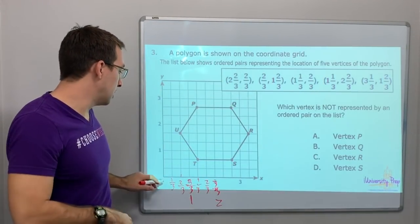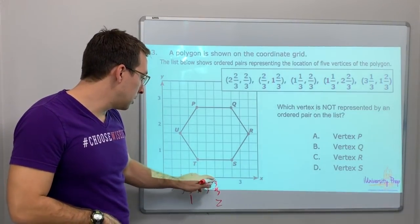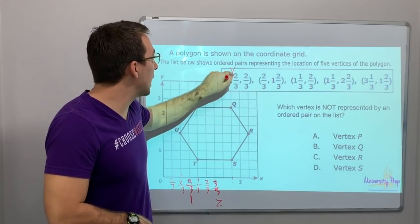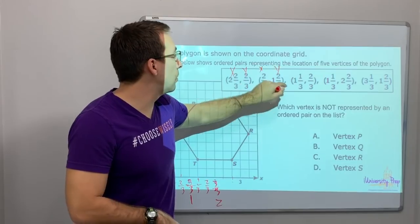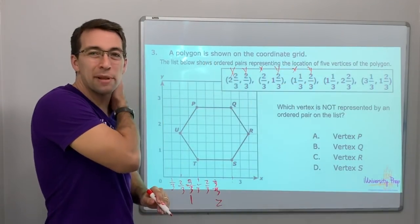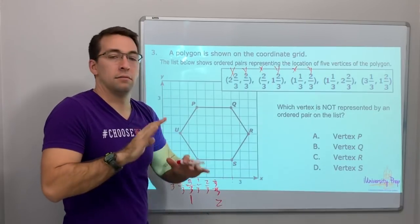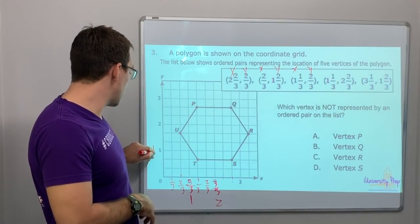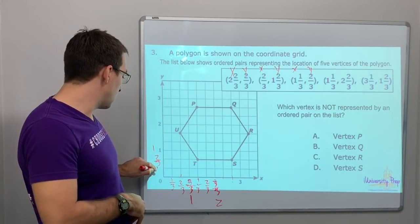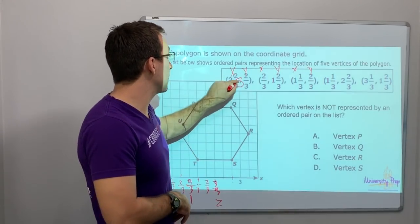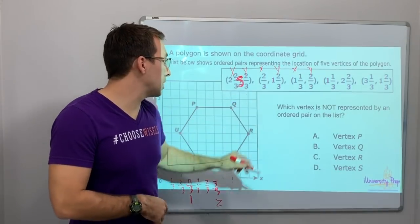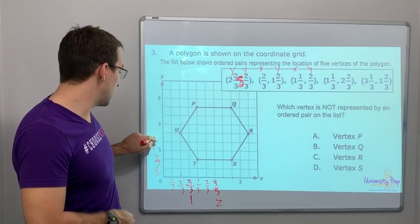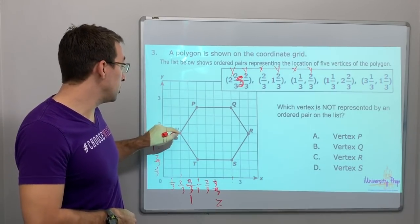Notice this is x, y — x, y — always look at that comma. Two and two-thirds, and two-thirds — that's S, S is covered. Two-thirds and one and two-thirds, then two-thirds — U is covered.